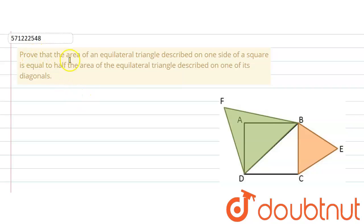The given question says that prove that the area of an equilateral triangle described on one side of a square is equal to half the area of the equilateral triangle described on one of its diagonals.